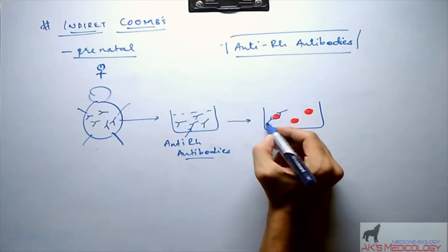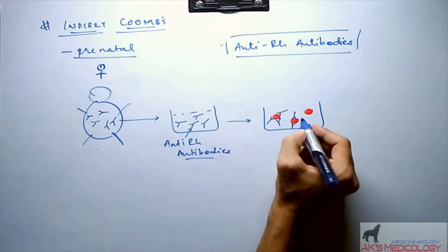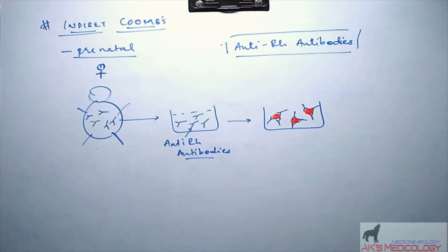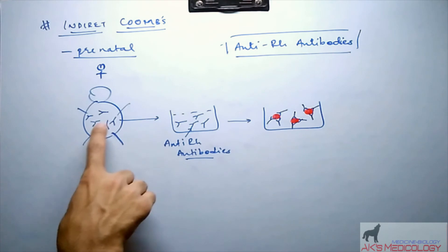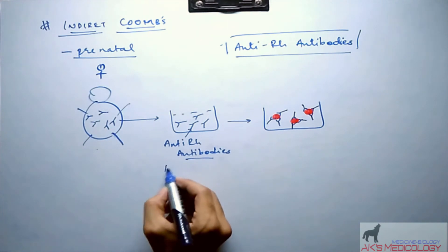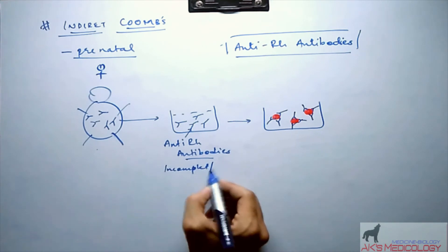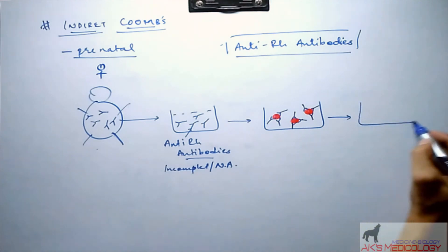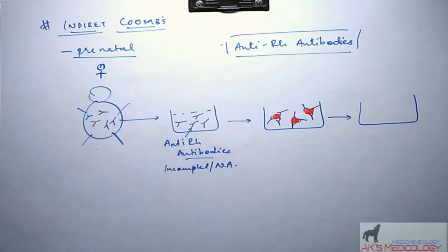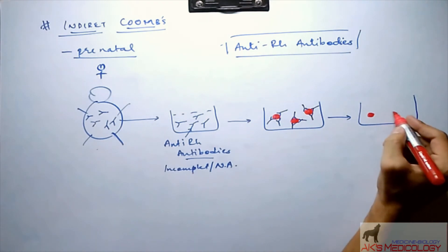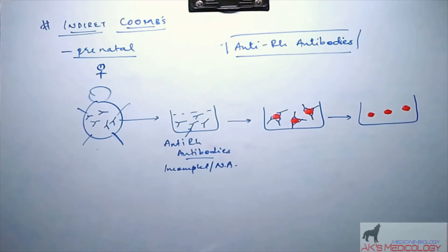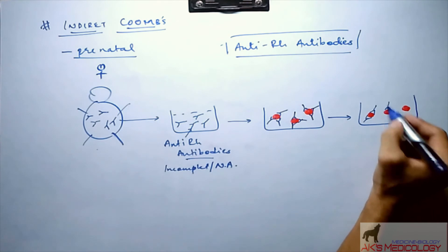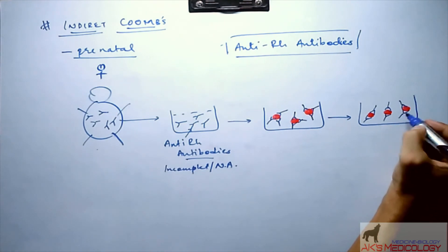What will happen is these anti-Rh antibodies will attach to the surface of the added Rh positive RBCs, but still the RBCs are not agglutinated because these antibodies are incomplete or non-agglutinable.